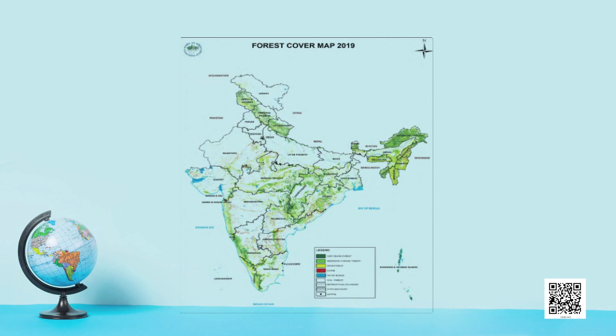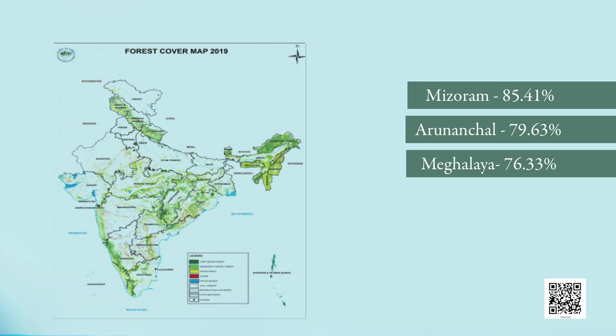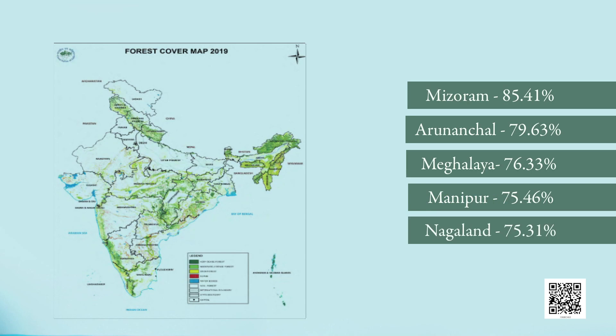Let us observe the map of forest cover in India for state-wise distribution. States with the largest forest cover are Madhya Pradesh, Arunachal Pradesh, Chhattisgarh, Odisha, and Maharashtra. In terms of forest cover as percentage of total geographical area, the top states in decreasing order are: Mizoram 85.41%, Arunachal Pradesh 79.63%, Meghalaya 76.33%, Manipur 75.46%, and Nagaland 75.31%. You can also mark states with low forest cover on an outline map of India.